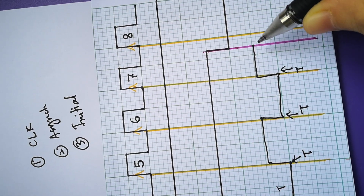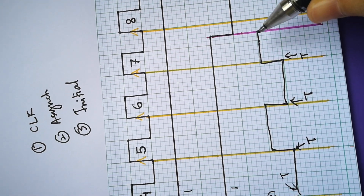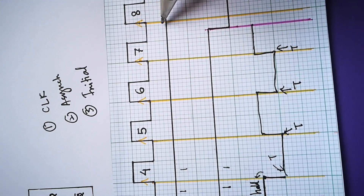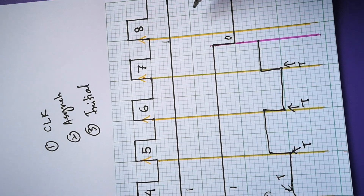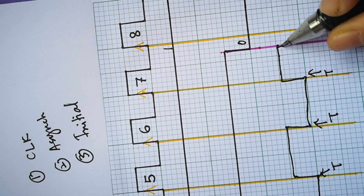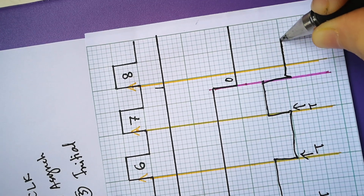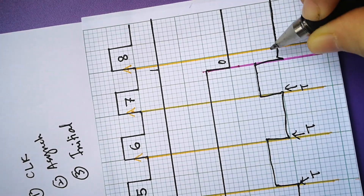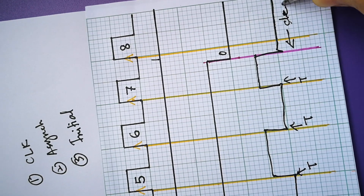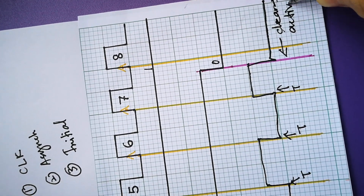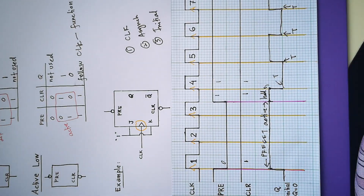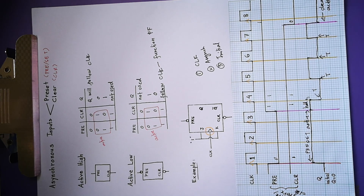It stops until it sees the transition of PRE or CLEAR. Now look at PRE and CLEAR — they are now 1, 0. This means clear is active. Clear active means Q=0, so it will clear until the end. That's all for the output Q for asynchronous inputs.